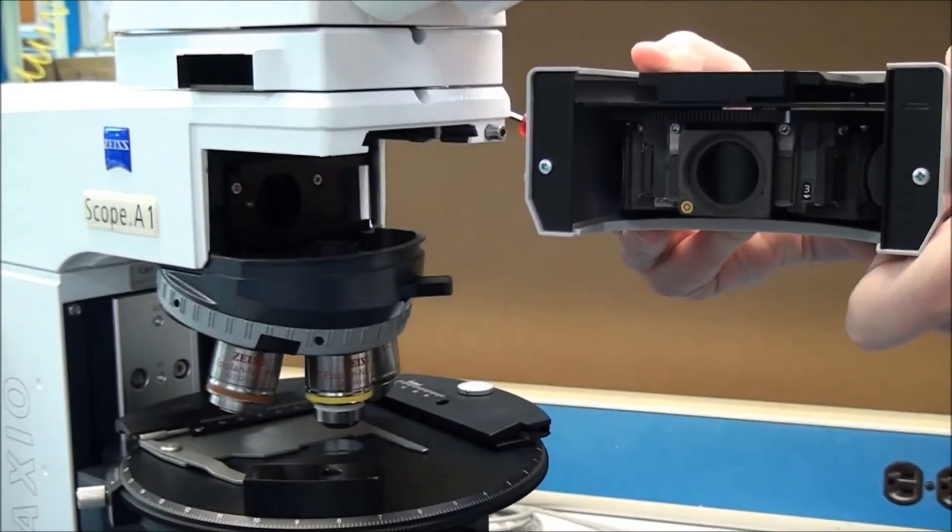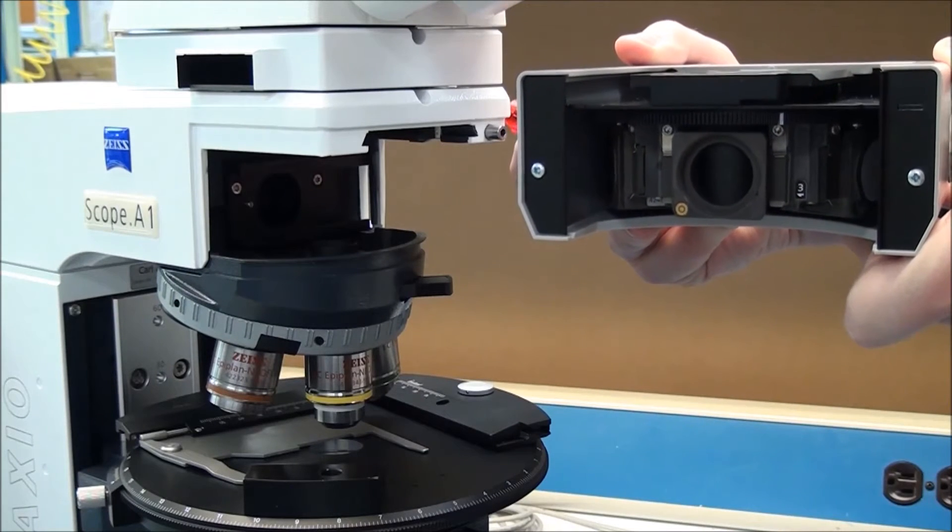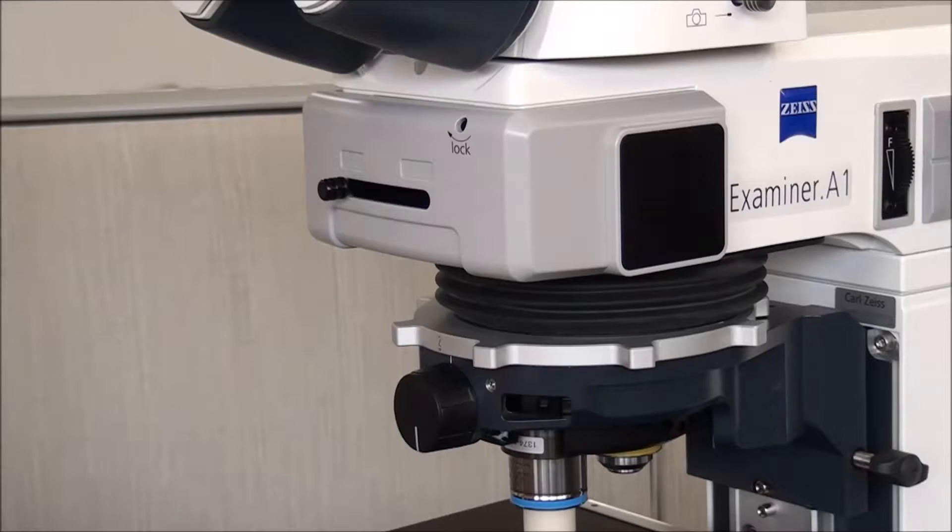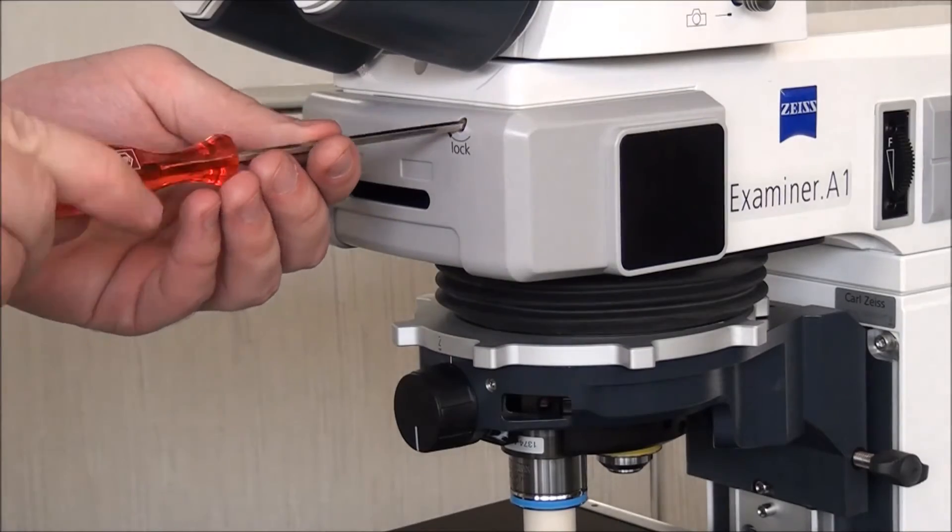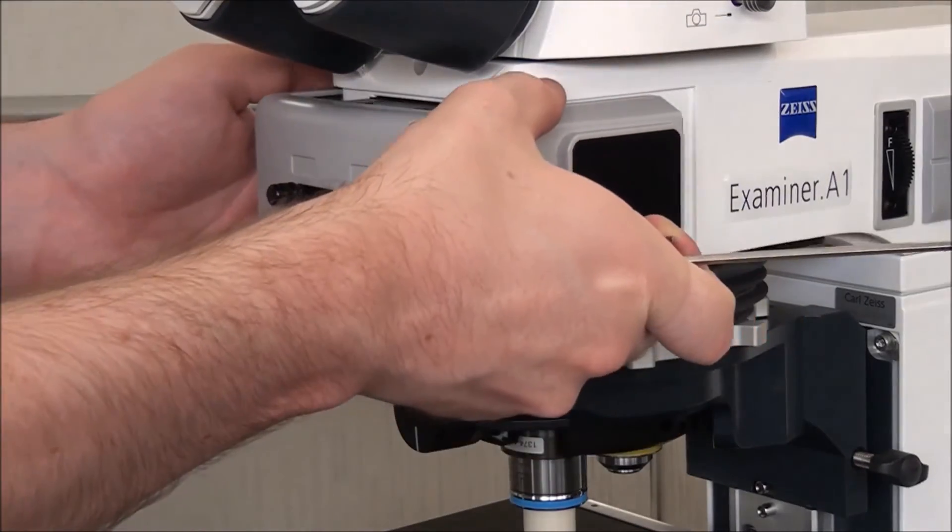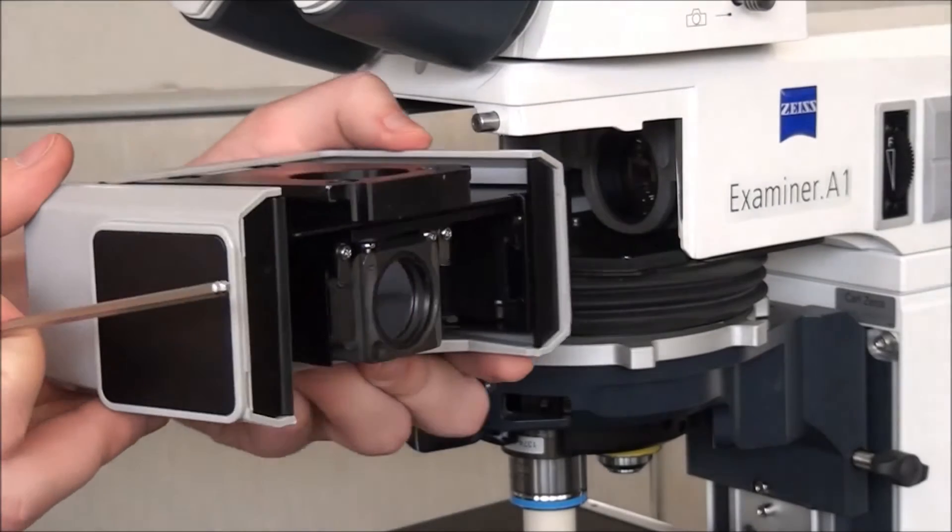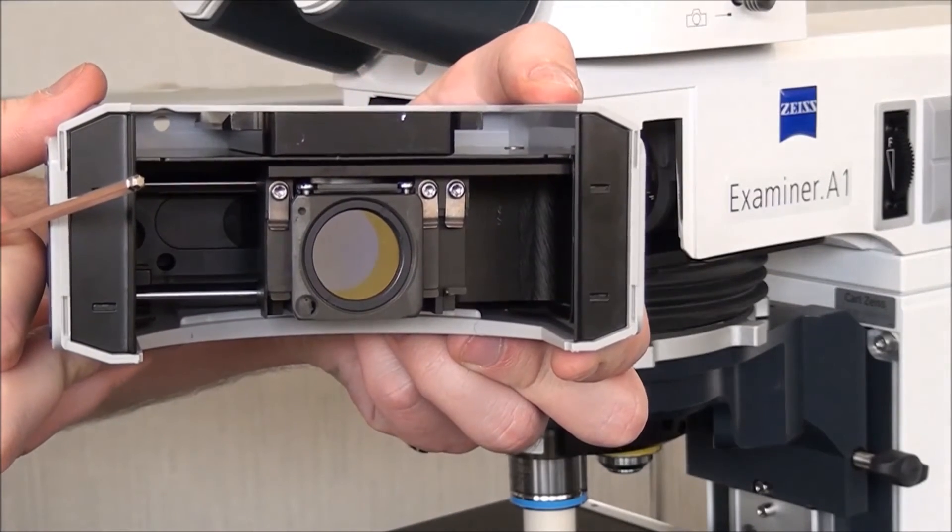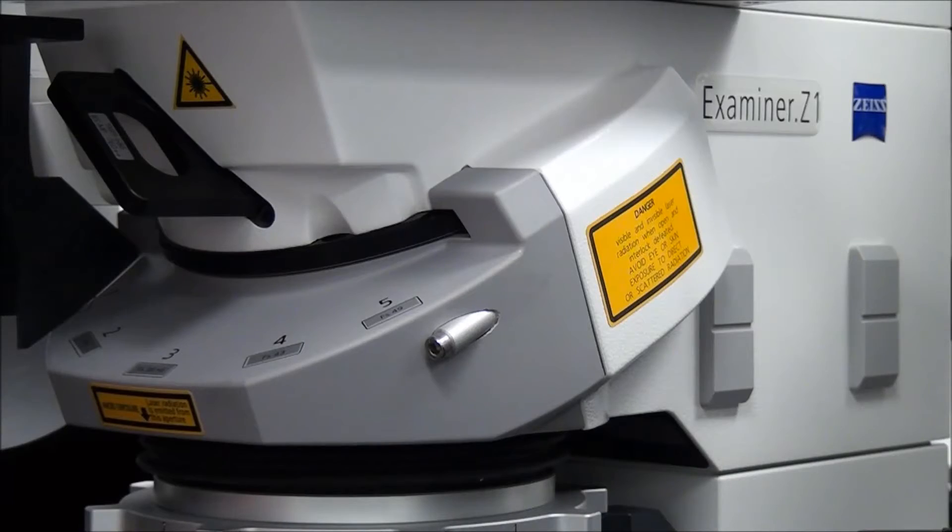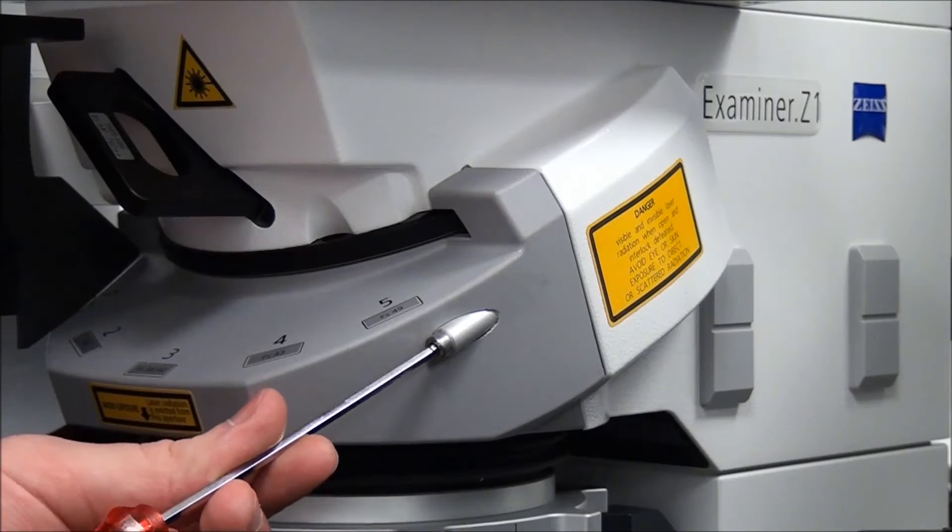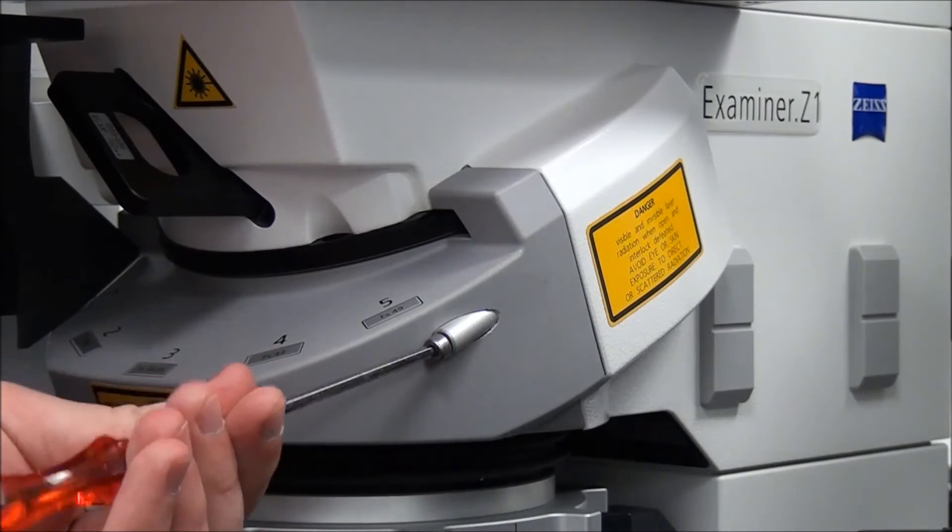On Axio Examiner A1, the reflector changer must also be completely removed using a 3mm hex Allen screwdriver as indicated. On the D1 and Z1 models, the gray cover is removed by loosening the two 3mm retaining screws.